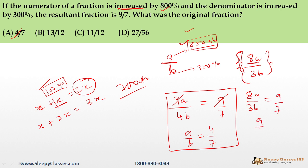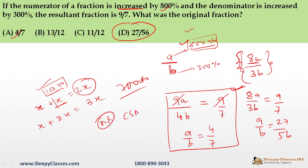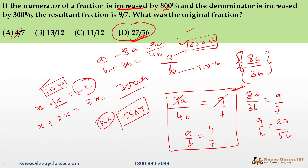If you incorrectly use 8A as the numerator instead of 9A, you would get A/B = 9×4 / (8×7) = 36/56 — a wrong answer. My goal in this question was to highlight this trap. The correct approach: 800% increase on numerator gives 9A, 300% increase on denominator gives 4B. So 9A/4B = 9/7, giving A/B = 4/7 as the final answer.